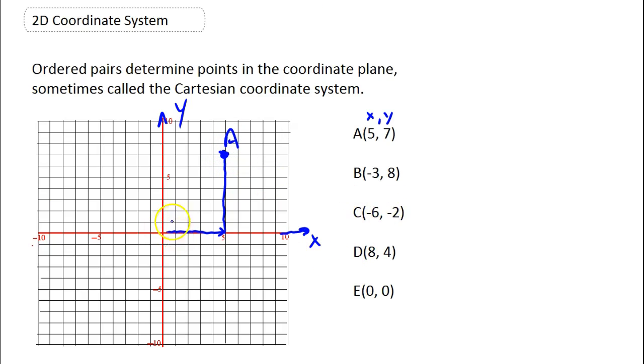Point B is negative 3, 8, so I go back 3, up 8, and there's point B. Point C is negative 6, negative 2, so I'm going to go back 6, down 2. There's point C. Point D is at 8, 4, so I'm going to go to the right 8, and I'm going to go up 4. So there's point D. And point E is at the origin, 0, 0.